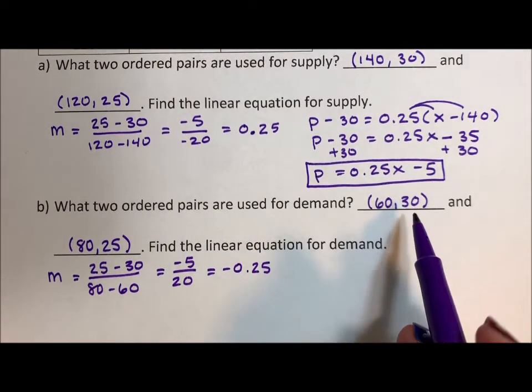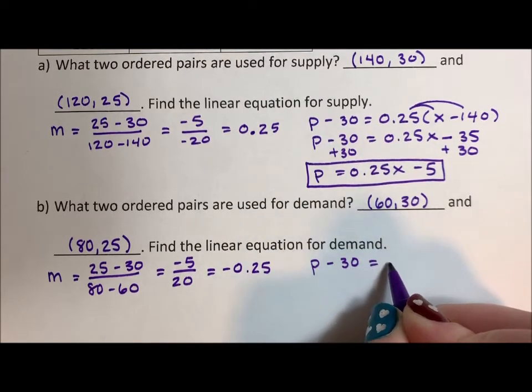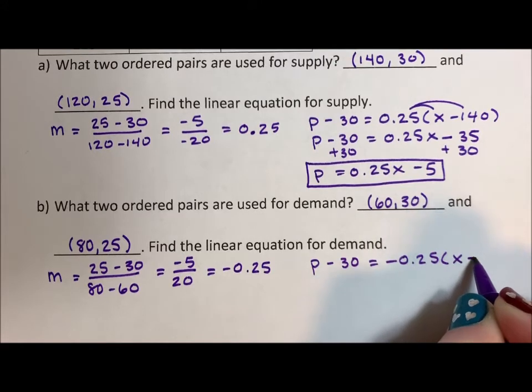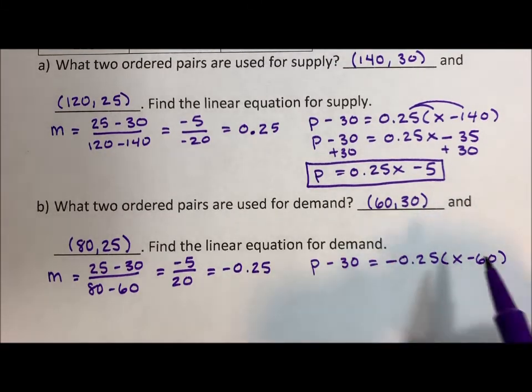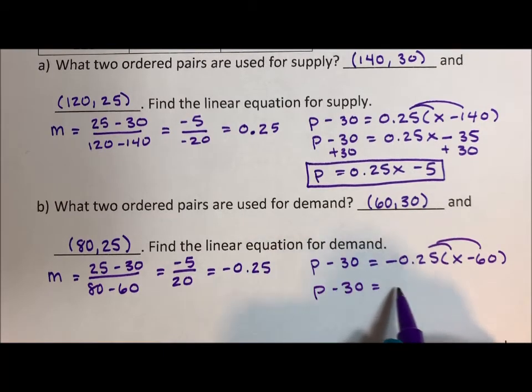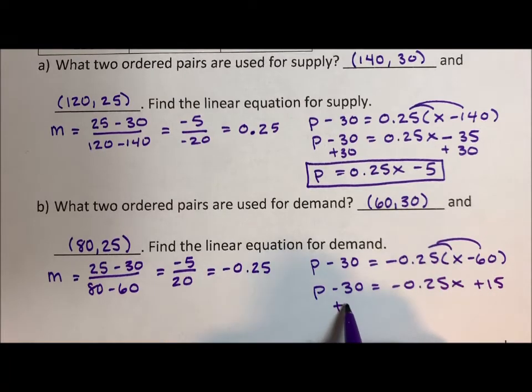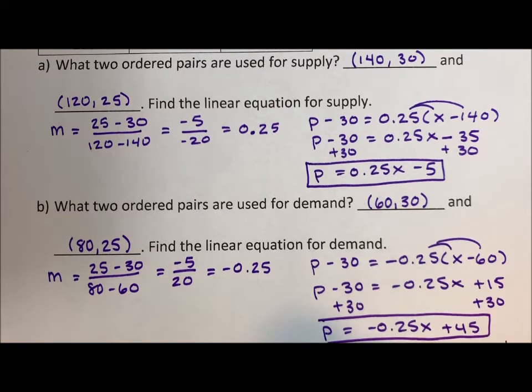I'm going to use the first point again, and I'm going to say p minus 30 equals negative 0.25 x minus 60. Again, I'm going to distribute in p minus 30 is a negative 0.25 x plus 15. I'm going to add my 30 over and p will equal negative 0.25 x plus 45. And this right here will be my equation for demand.